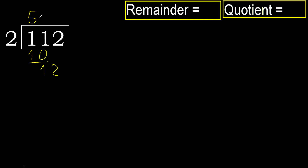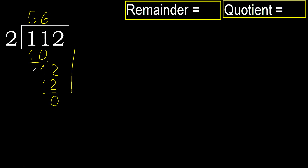Next: bring down 12. 2 multiplied by 6 is 12, it's not greater. Subtract: 0. There is no next number, therefore finish it.